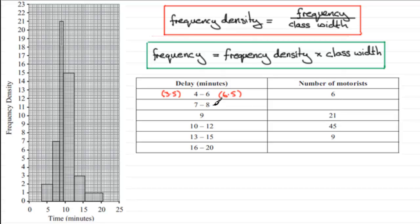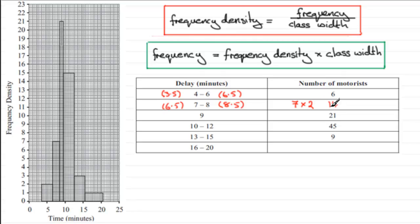To fill in the bar from 7 to 8, the lower bound is 6.5 and the upper bound is 8.5, giving a width not of 1 unit but of 2 units. Looking at the frequency density for this bar, it's up to 7. So 7 times the width of 2 units gives us 14 — that is, 7 times 2 equals 14.